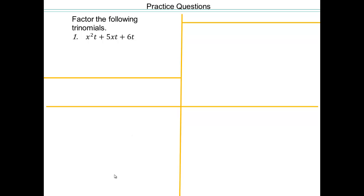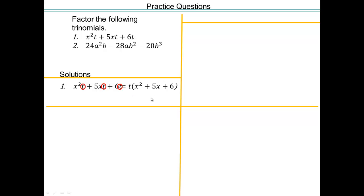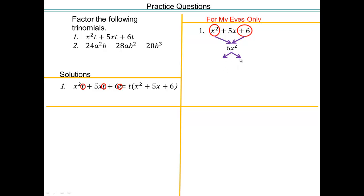Assuming you've paused and come back — all of these terms share a t, so let's factor out the t. Now you have x squared plus 5x plus 6. I'd recommend doing your work in a separate column to keep things clean. For this trinomial, 6x squared is the product, and we want two numbers multiplying to give 6x squared and adding to give 5x — that's 3x and 2x, just like before.